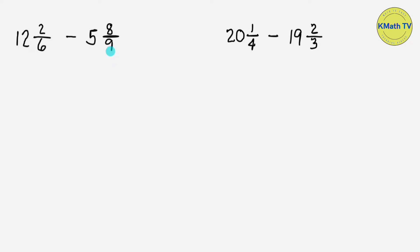As you can see, the denominators are not the same. These are dissimilar fractions. In subtracting mixed numbers with dissimilar fractions, the first step is to change the fractions to similar fractions by getting the least common denominator or LCD and finding the equivalent fractions. The LCD is the least common multiple or LCM of the denominators. The denominators are 6 and 9, so let's find the LCM of 6 and 9 and use that as the denominator.